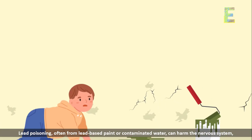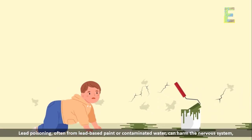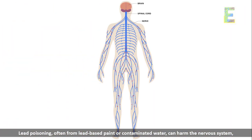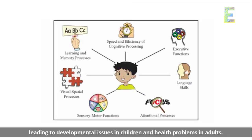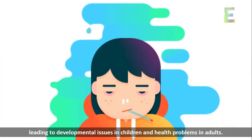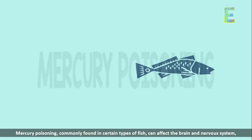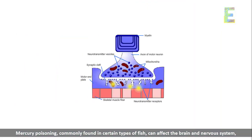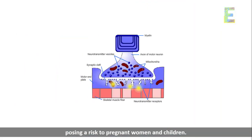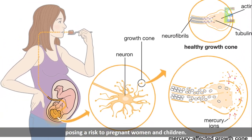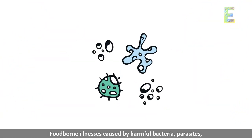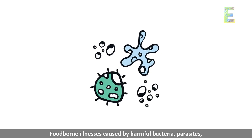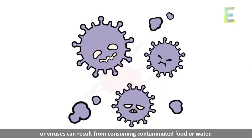Lead poisoning, often from lead-based paint or contaminated water, can harm the nervous system, leading to developmental issues in children and health problems in adults. Mercury poisoning, commonly found in certain types of fish, can affect the brain and nervous system, posing a risk to pregnant women and children.